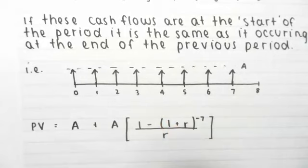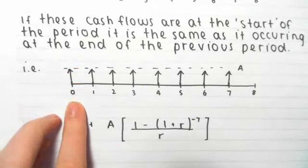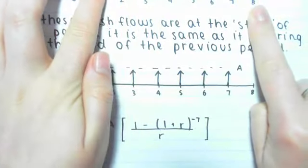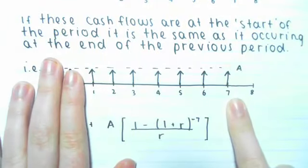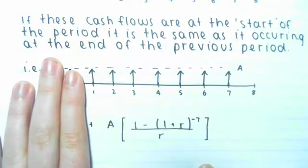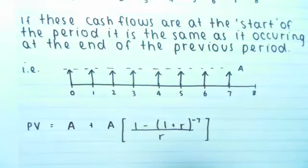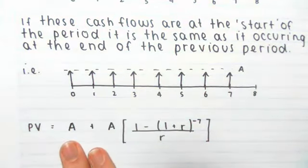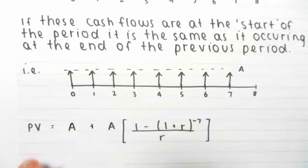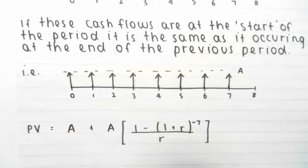For a deferred annuity due, it's best to draw out the timeline diagram and shift the cash flows forward, since you won't necessarily have a cash flow at year zero. For example, if the annuity starts in period two, shifting forward by one means you just have the annuity portion with no present-value cash flow to add separately. Think of it conceptually — just shift the diagram forward by one period and work through it.